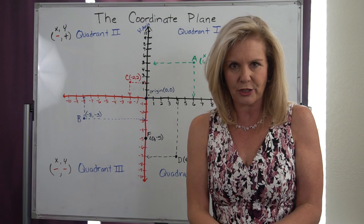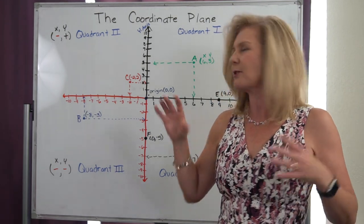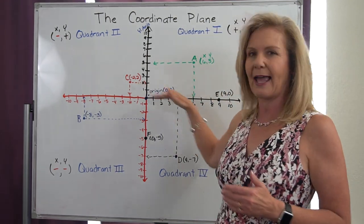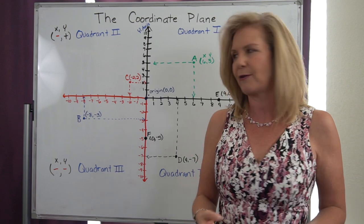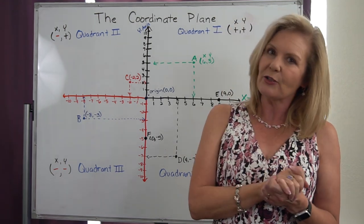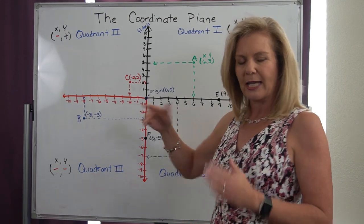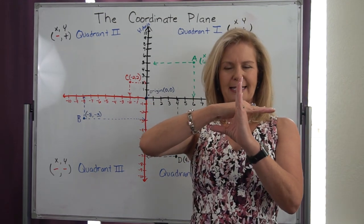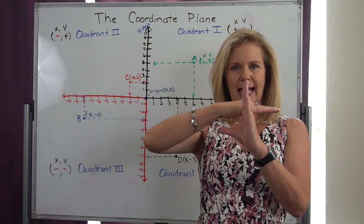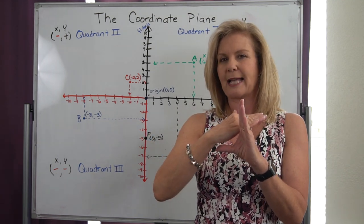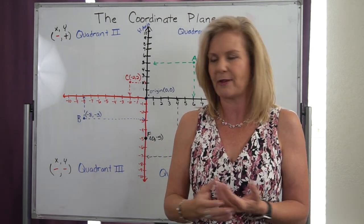So every location within the coordinate plane, whether it's in the quadrants or on the axes, can be a location of a point. Now, we have a few special points. One of them is called the origin. It's where the two axes actually cross, the x and the y, and it always crosses at the point (0, 0).